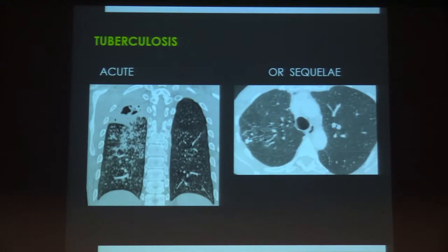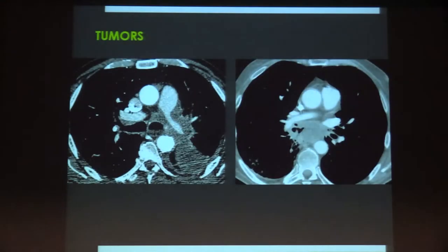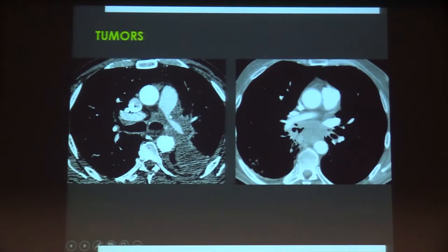The second specific finding category concerns tuberculosis, which can be a cause of severe haemoptysis — both in patients with acute infection and in patients with sequelae of tuberculosis, because of bronchial hypervascularization. Tumors are another cause: here is a lung cancer clearly invading the left pulmonary artery, and here is another case.